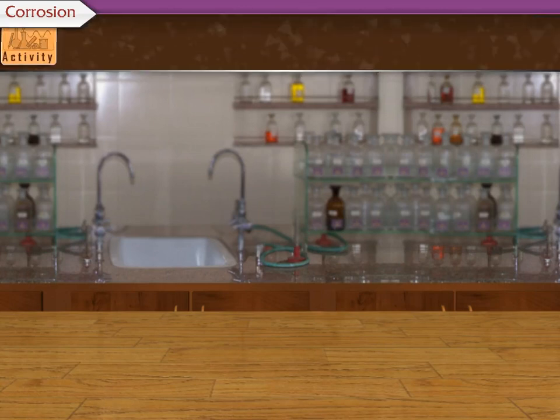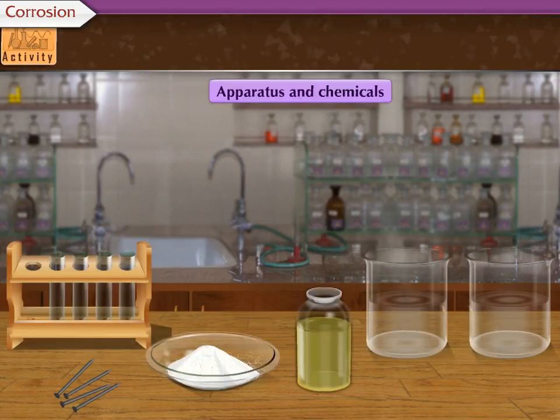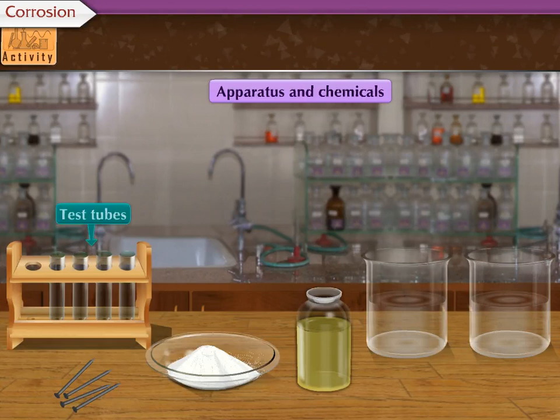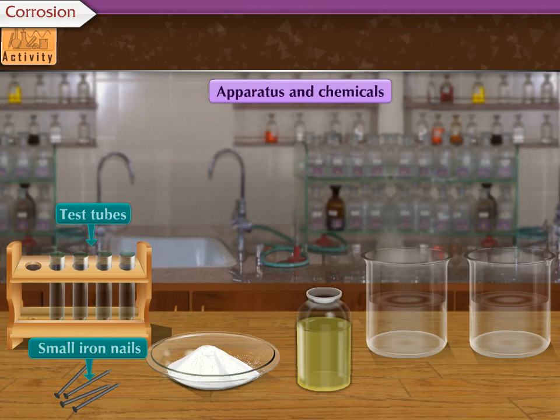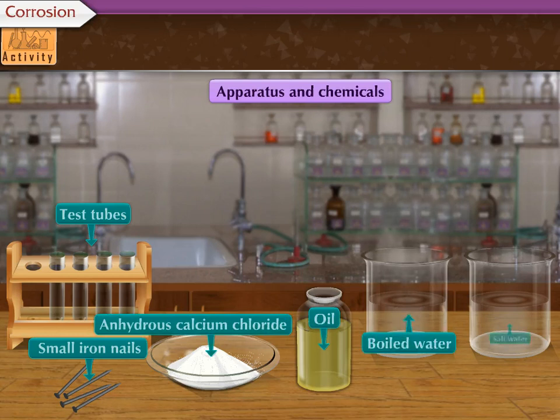Activity. To perform this activity, we require 4 test tubes, 4 small iron nails, etc. The chemicals required are anhydrous calcium chloride, oil, boiled water, and salt water.